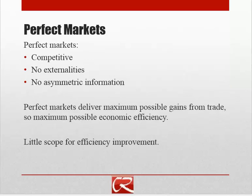And finally, perfect markets have no asymmetric information. Asymmetric information is a situation where one party to the transaction knows important information that they conceal or have an interest to conceal from the other party. Perfect markets are a benchmark we measure things against. They do deliver maximum possible gains from trade and maximum possible economic efficiency, with little scope for improvement.